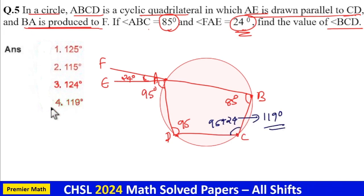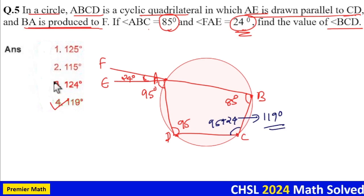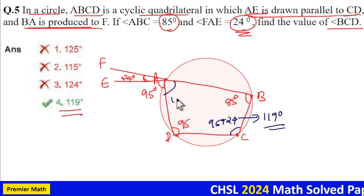Option 4 is your answer because this angle is equal to 95 plus 24, that is 119.